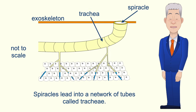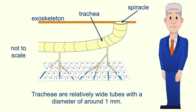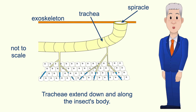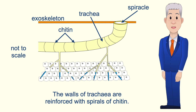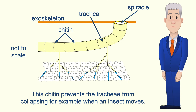Spiracles lead into a network of tubes called tracheae. Tracheae are relatively wide tubes with a diameter of around one millimeter, and they extend down and along the insect's body. The walls of tracheae are reinforced with spirals of chitin, and this chitin prevents the tracheae from collapsing, for example when an insect moves.